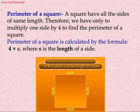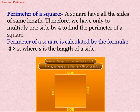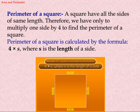Perimeter of square. A square has all sides of the same length. Therefore, we only have to multiply one side by 4 to find the perimeter of a square. The perimeter of a square is calculated by the formula 4 into s, where s is the length of a side.